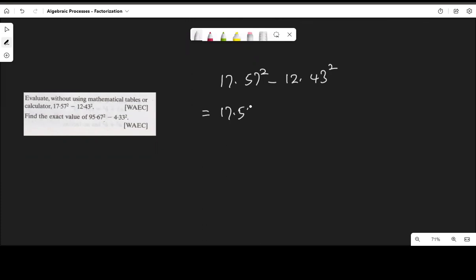This equals 17.57 plus 12.43, then multiply by 17.57 minus 12.43.